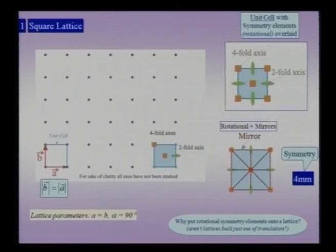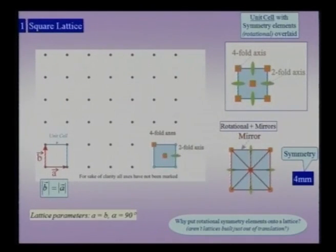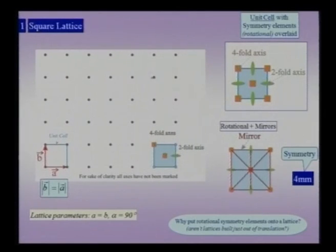This 4-fold symmetry axis is located not only at the lattice points but also at the point exactly between all the lattice points. Additionally, there are 2-fold rotation axes at the edges of the cells, exactly between two of the 4-fold axes. When a unit cell is overlaid with these symmetry operators, the unit cell is operated upon by the A and B translation vectors to generate an infinite 2-dimensional lattice, and the mid-points also carry the 4-fold rotational symmetry.